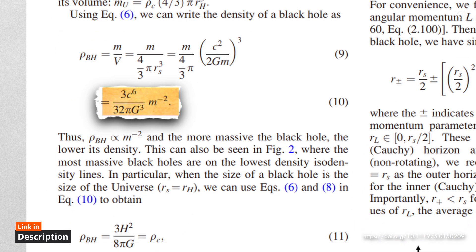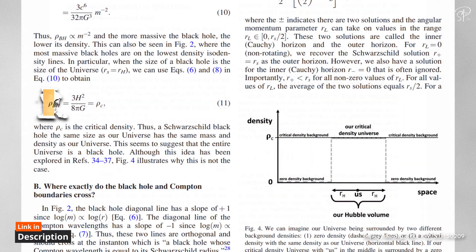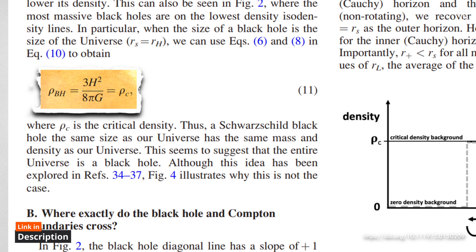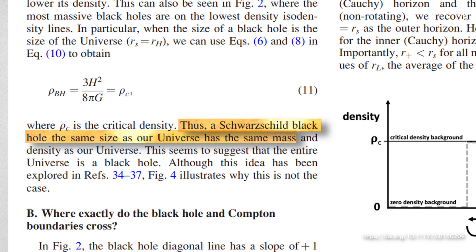we can write the density of a black hole as this. Thus, rho of the black hole proportional to M to the power minus 2 and the more massive the black hole, the lower its density. In particular, when the size of a black hole is the size of the universe or RS equals to RH, we can use the previous equations to obtain rho of black hole equals to 3H squared divided by 8 pi G equals to rho C. Or in simple words, the density of the black hole is equal to the critical density of the universe. Thus, a Schwarzschild black hole, the same size as our universe, has the same mass and density as our universe. This seems to suggest that the entire universe is a black hole.